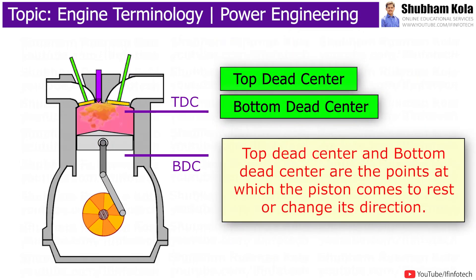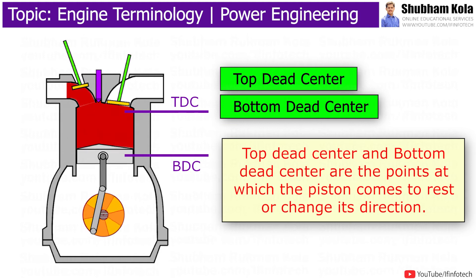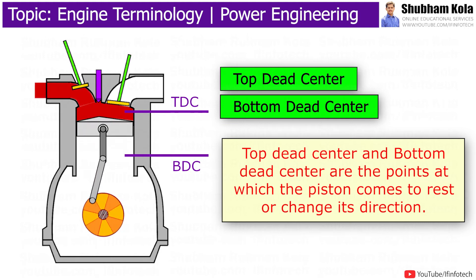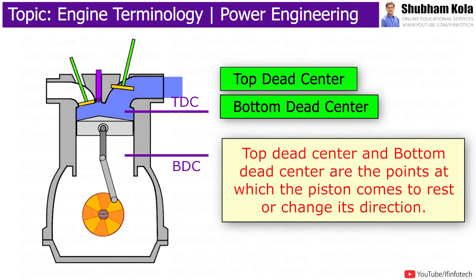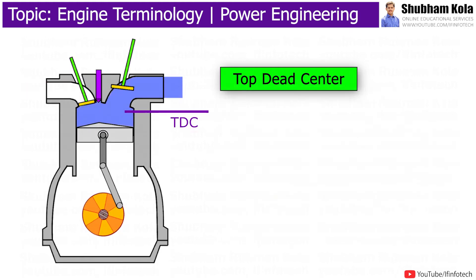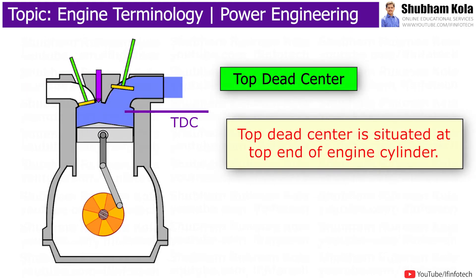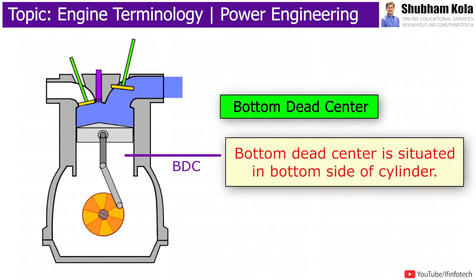Top dead center and bottom dead center are the points at which the piston comes to rest or changes its direction. Top dead center is situated at the top end of the engine cylinder, while bottom dead center is situated at the bottom side of the engine cylinder.